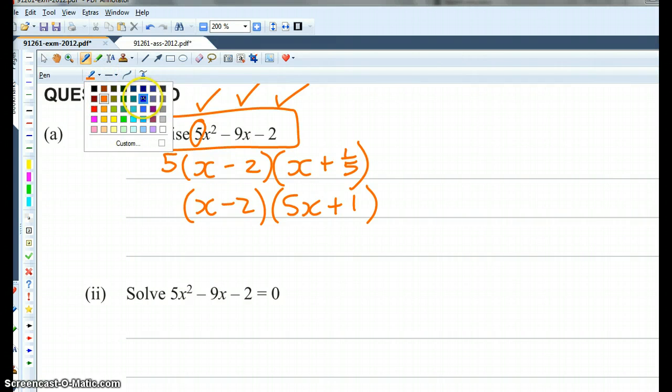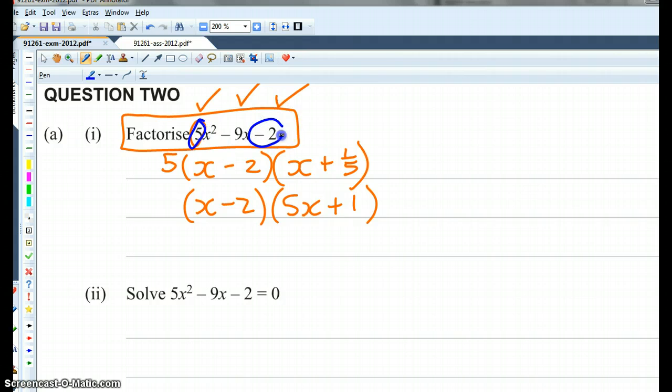The second method I'm going to show you is this. Take the 5 and the negative 2. Multiply them together, you get negative 10. You're looking for two numbers that a times b is negative 10, and a plus b is negative 9. So those numbers are going to be negative 10 times 1, and negative 10 plus 1. Does that make sense? Yes. Negative 10 and 1.